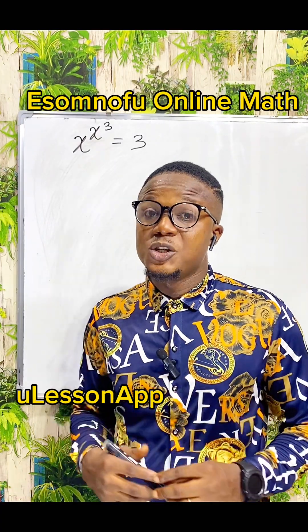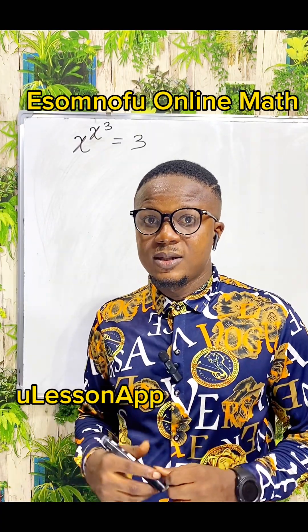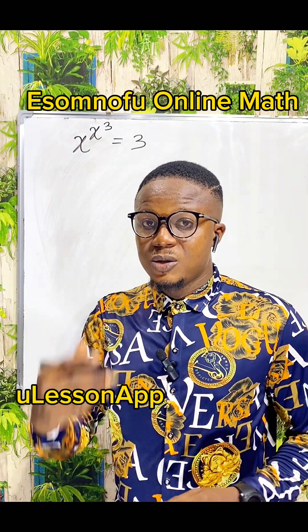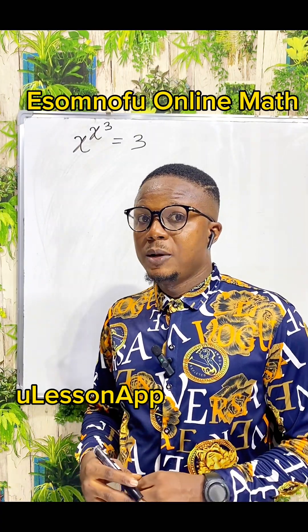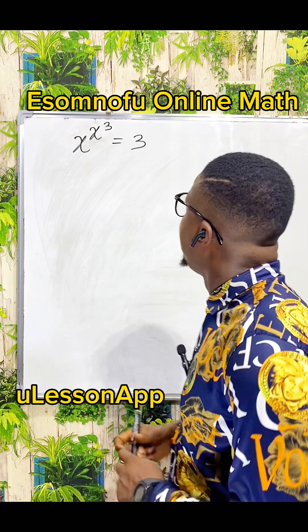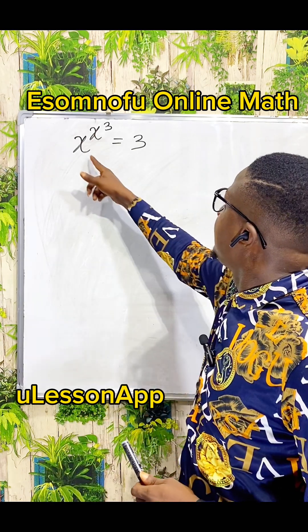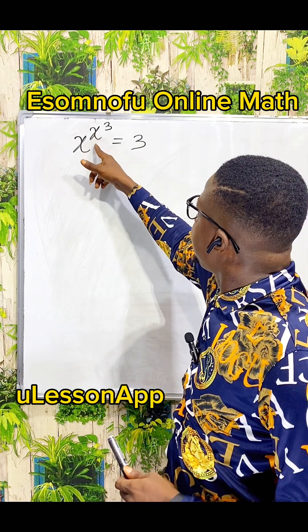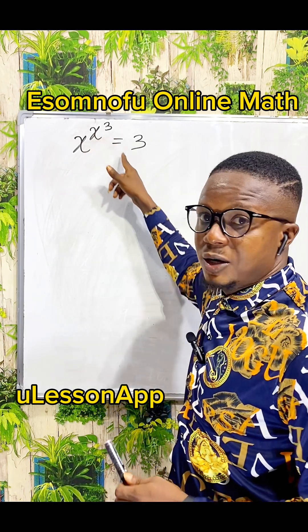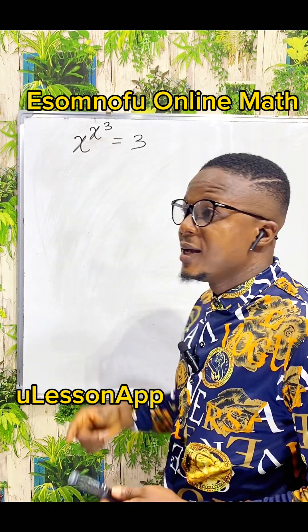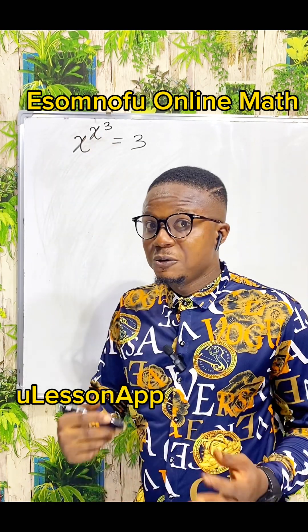Hello everyone. This lesson is powered by your lesson app. So let us solve this problem. We have x to the power of x to the power of 3 is equal to 3. Our target is to find the value of x.